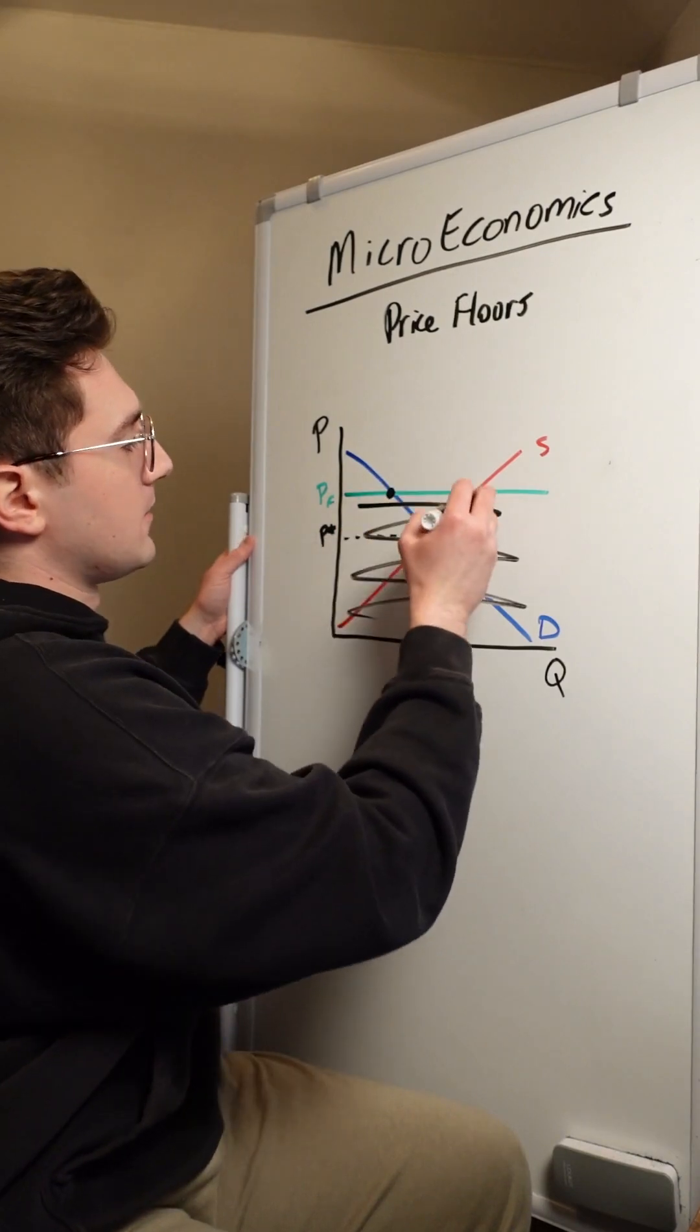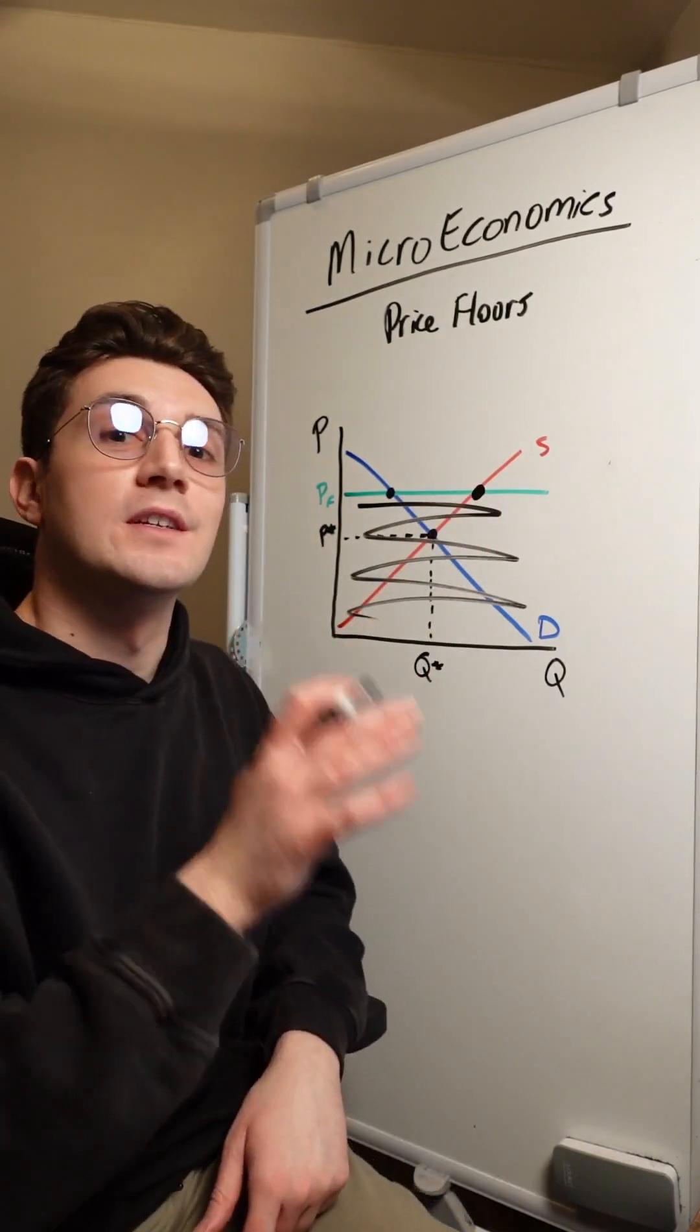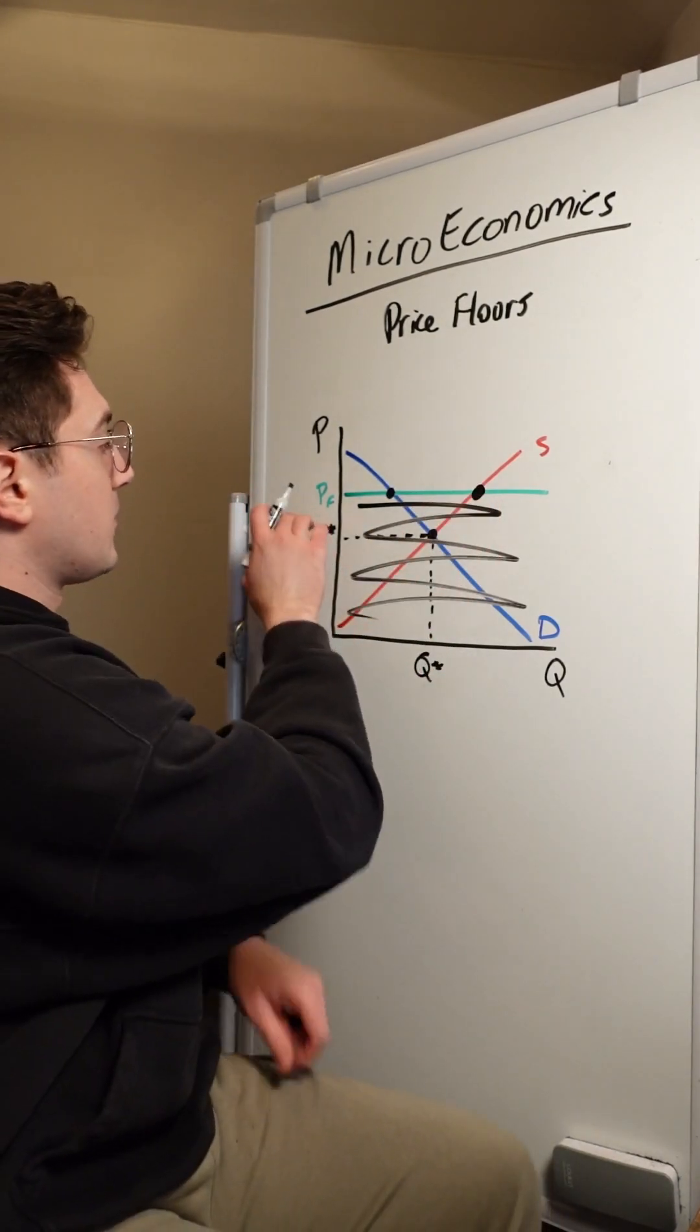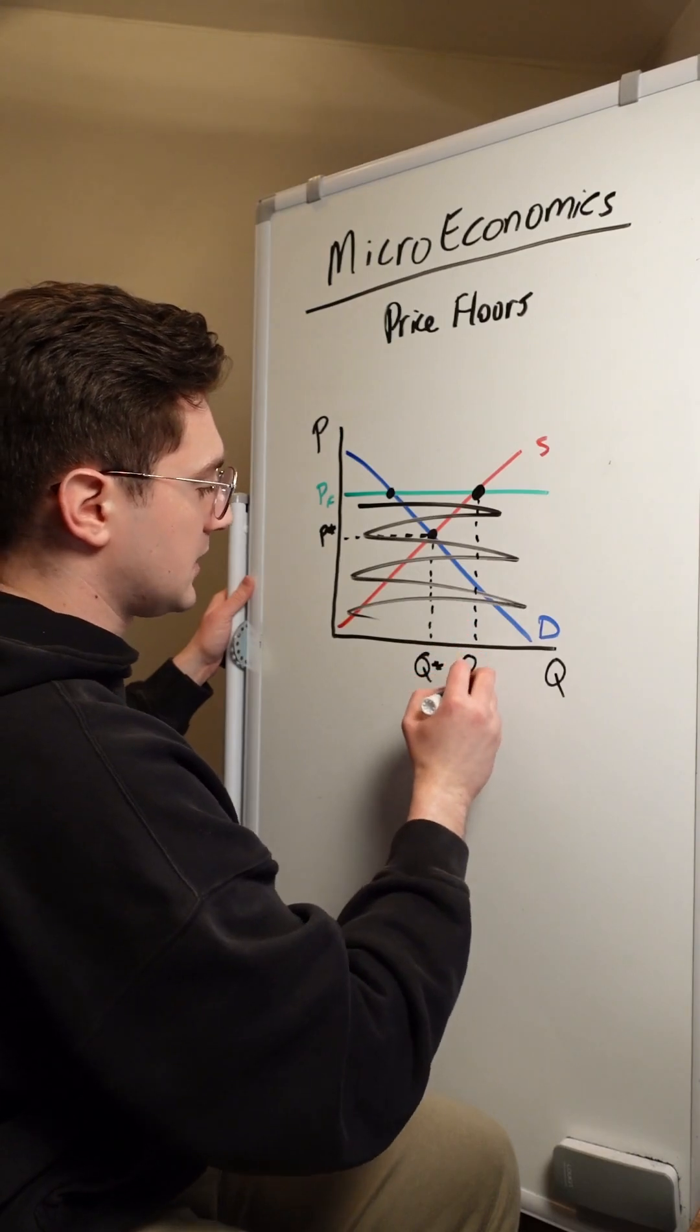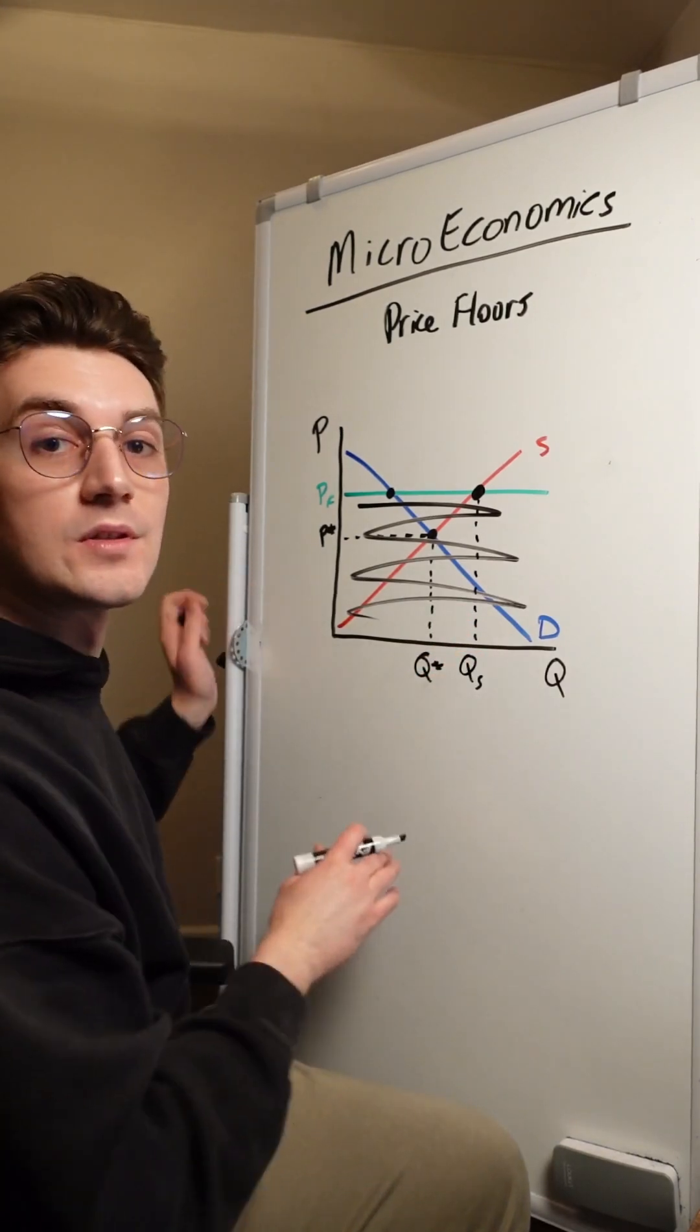We're now hitting the demand curve right here and the supply curve right here. In translation, what this means is that at this new price floor value, producers are going to want to sell or supply more units to the market.